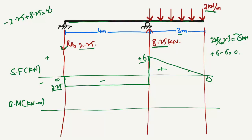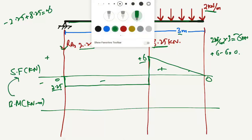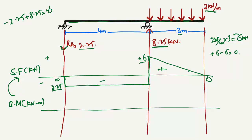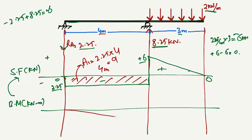To draw the bending moment diagram we take help from the shear force diagram, because the bending moment depends on the shear force — specifically, it is found from the area under the SFD. For the first block, the length is 4 meters and the height is 2.25 kN, so the area A1 = 2.25 × 4 = 9 kN·m. This gives the bending moment value of −9 kN·m at support B.